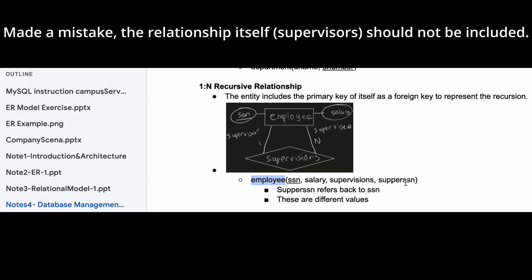And then we have the super SSN. The reason why we need a super SSN is because in a one-to-many recursive relationship, we are going to take the many part and it needs to relate back to our SSN.